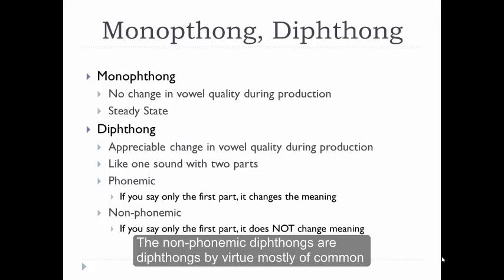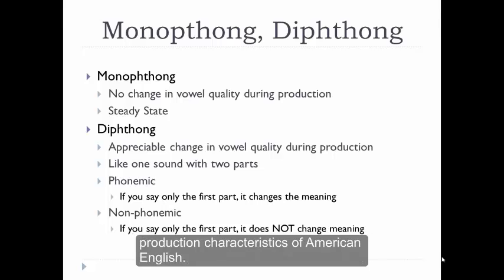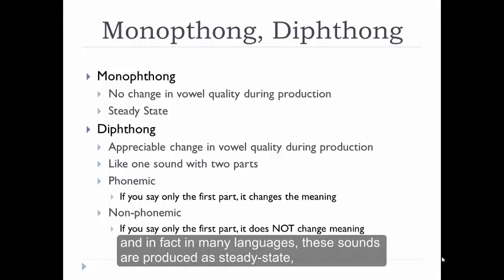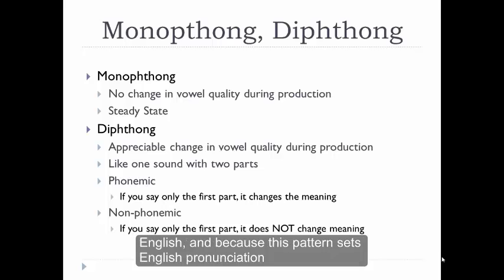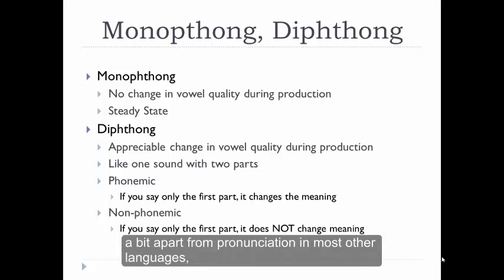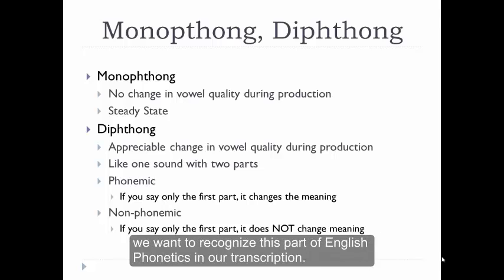The non-phonemic diphthongs are diphthongs by virtue mostly of common production characteristics of American English. In other words, these don't have to be diphthongs, and in fact, in many languages, these sounds are produced as steady-state monophthong vowels. But in English, we add a little bit of an off-glide to these vowels almost all of the time. And because there's such a strong pattern in English, and because this pattern sets English pronunciation a bit apart from most other languages, we want to recognize this part of English phonetics in our transcription.